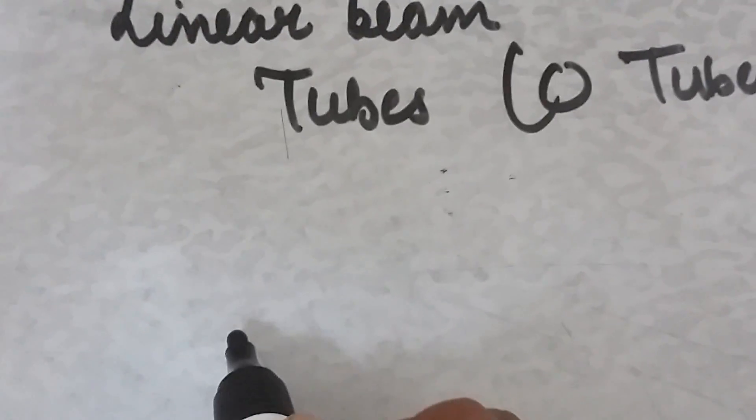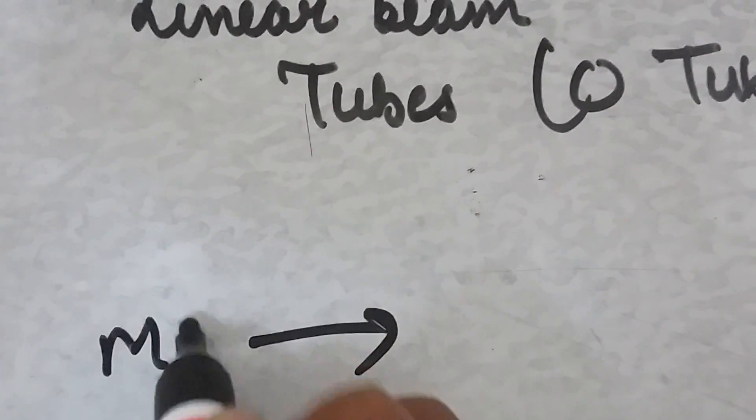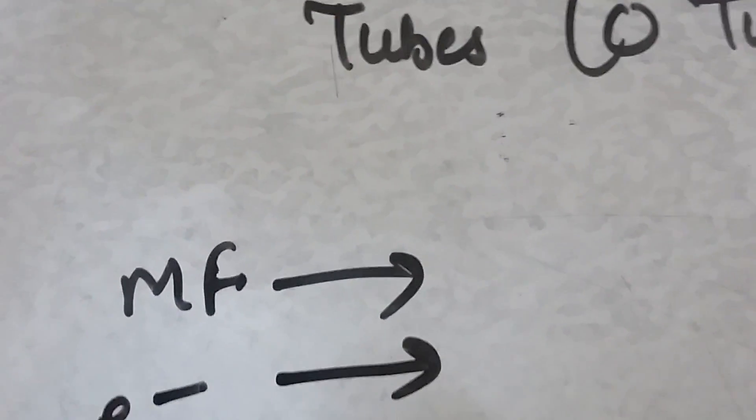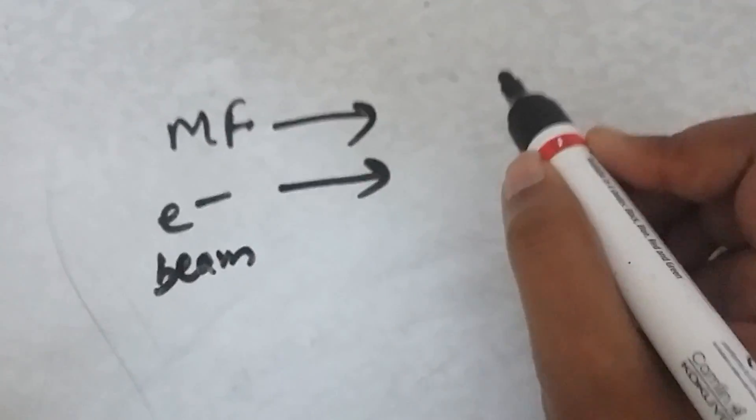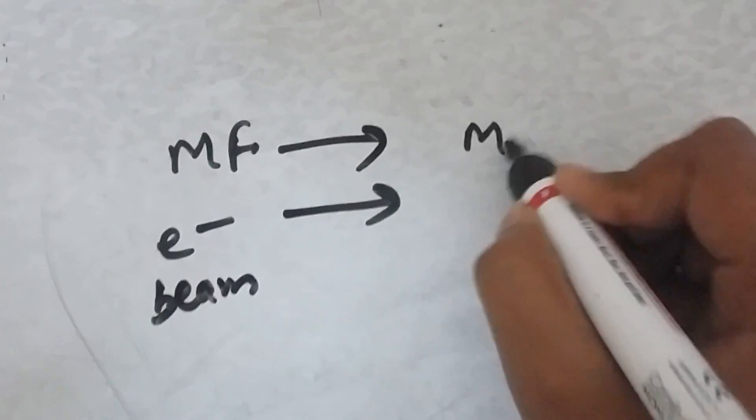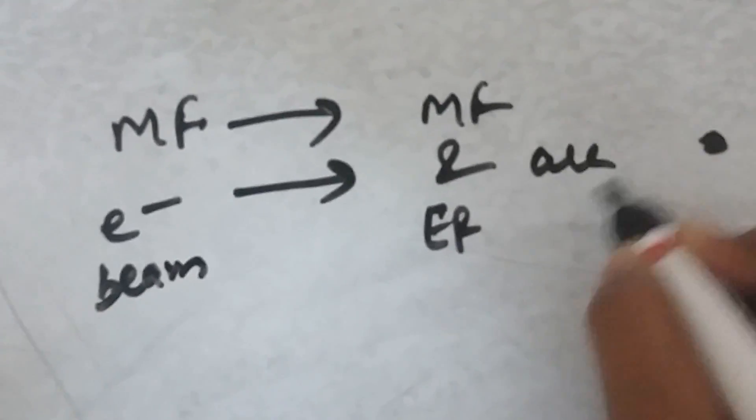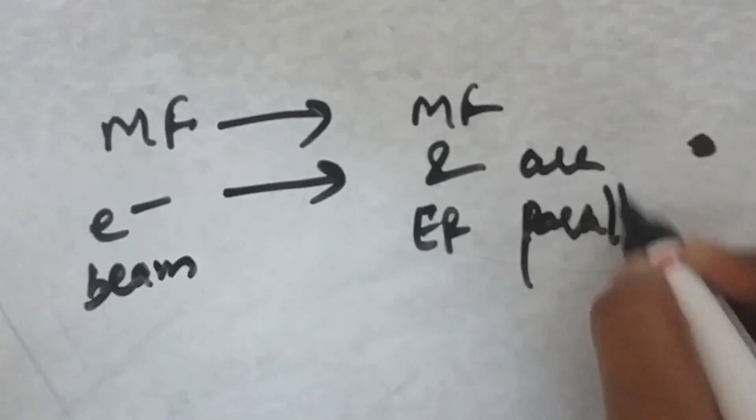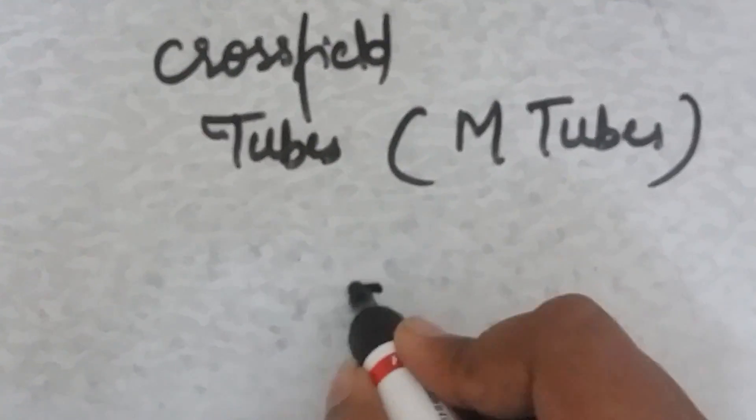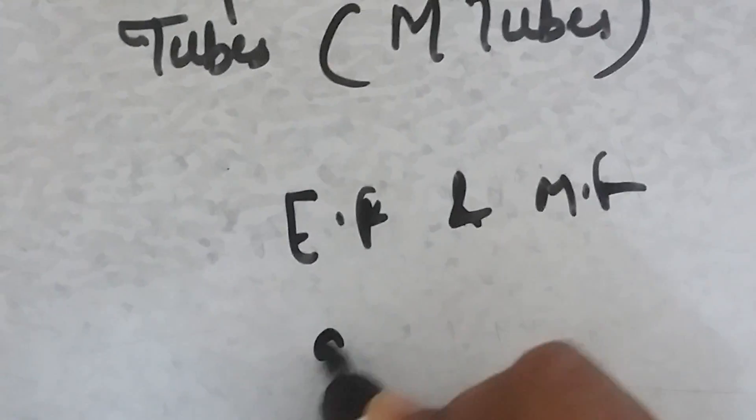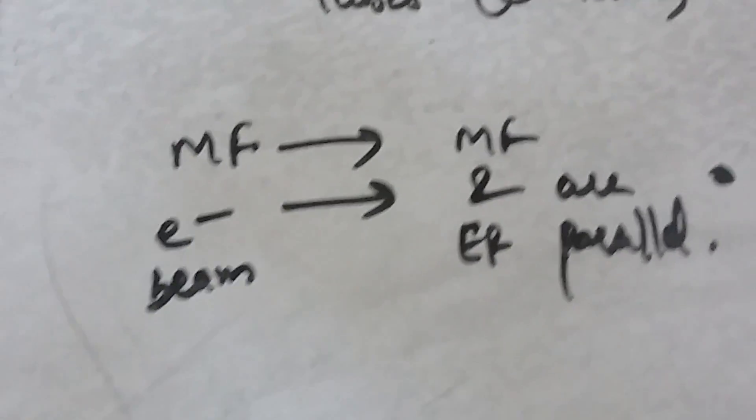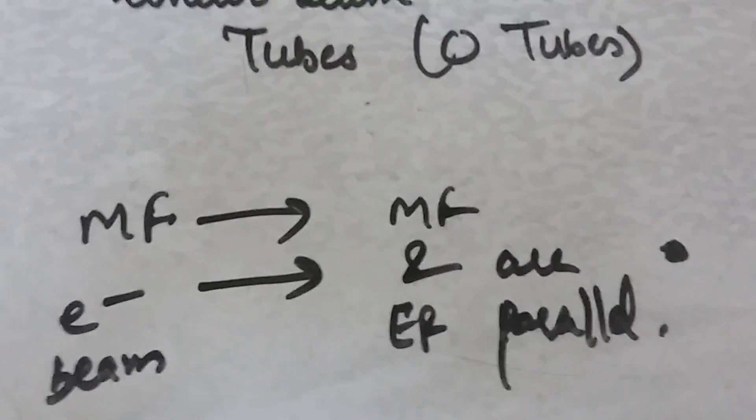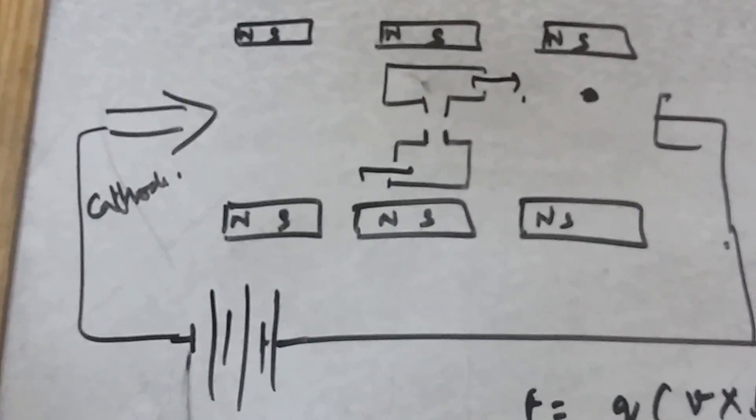They are called linear beam tubes because here the axis of the magnetic field coincides with the axis of the electron beam, meaning the magnetic field and electric field are parallel. In cross field tubes, electric fields and magnetic fields are perpendicular to each other. That's why they are called cross field tubes versus linear beam tubes.